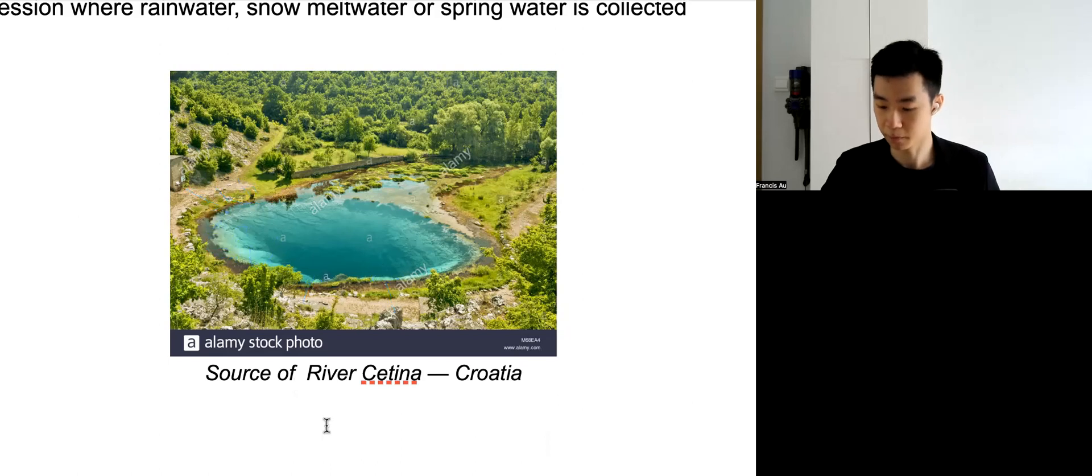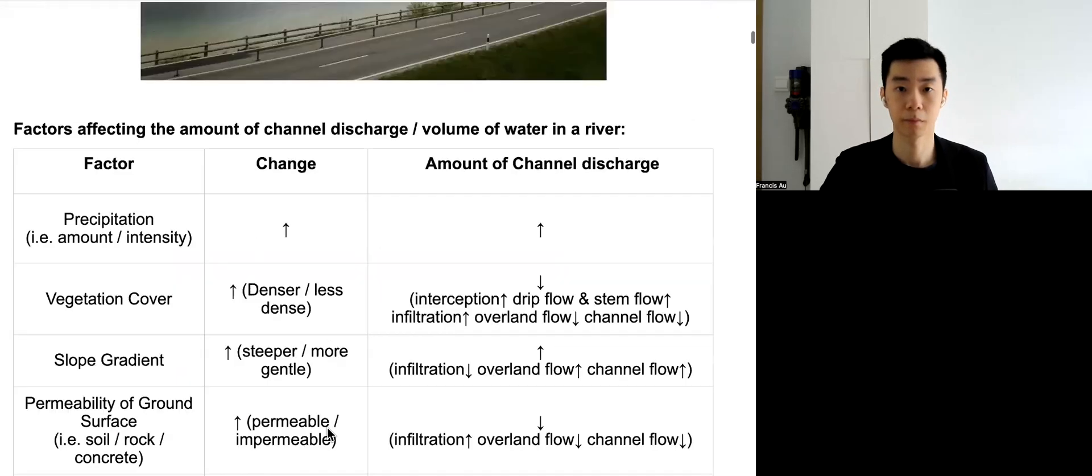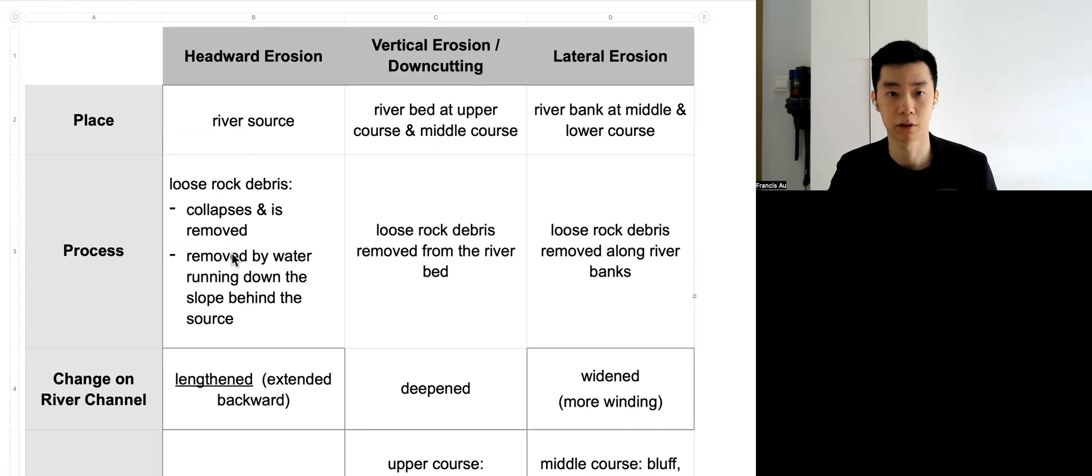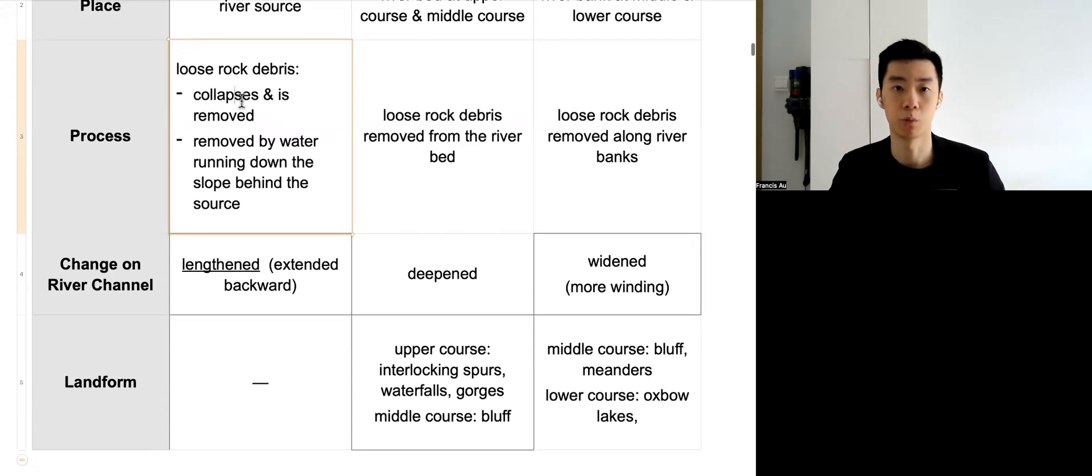Headway erosion occurs only at the river source, where we have removal of rock and extending the length of the river, total length of it.